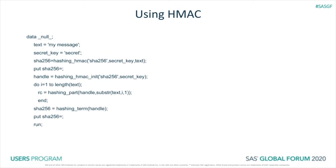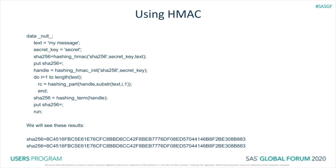HMAC is a specialized hashing technique that uses all the different hashing methods but also introduces what we call a secret key, and there is a public algorithm for HMAC. You may be asked to implement something that uses HMAC. It is completely available with the hashing function using the suffix HMAC. We call hashing_HMAC, give it our secret key and the message, and get a digest back. We can also do it in a piecemeal fashion, processing one character at a time, and we get the same digest — so everything about piecemeal works for HMAC just as well.